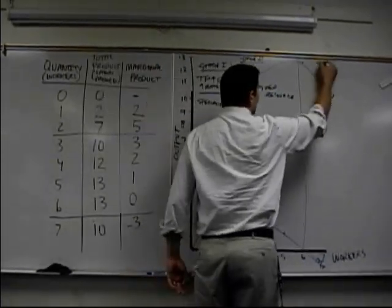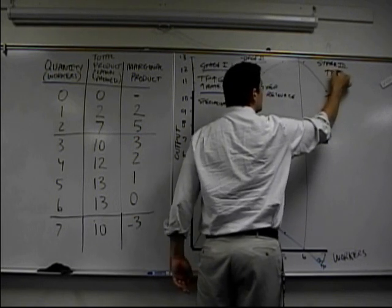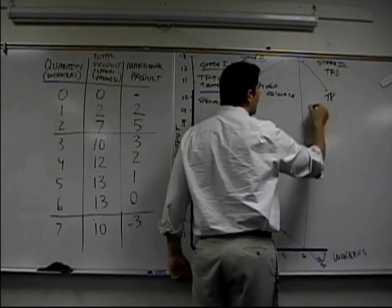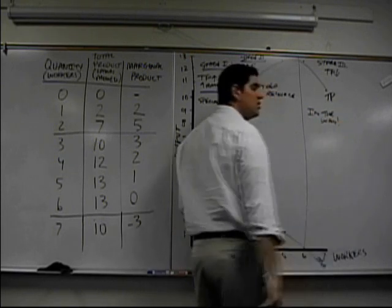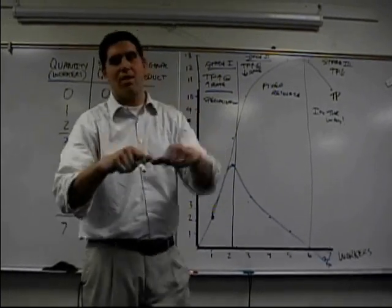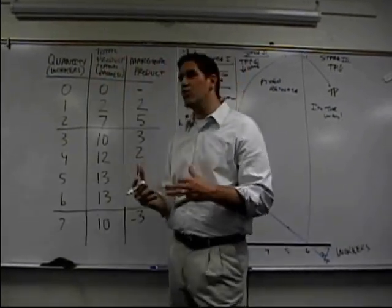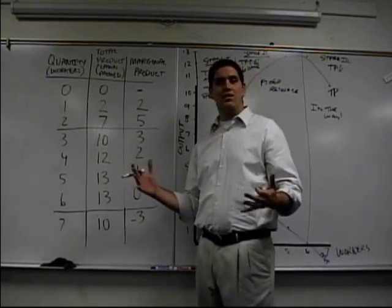This last round, the stage is called stage three. One, two, three. And this one, total product is actually falling. And the reason why is workers are in the way. Good. In this situation, now your workers are in each other's way. They're trying to mow the lawns, but they're hitting each other. There's not enough room on the truck for them to be sitting and stuff like that. Now they're in each other's way. That's the concept.